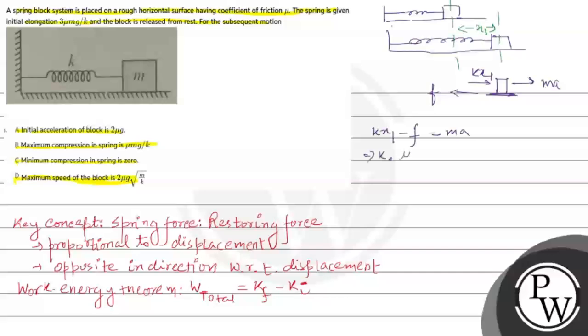x1 ka value hoga 3 mu mg by k. k gets cancelled out. And f ka value hoga mu into n. Mu is the coefficient of friction and n is the normal force, and n equals to mg, that is the gravitational force. So 3 mu mg minus mu mg equals to ma. m gets cancelled out from both sides of the equation, and we have acceleration a equals to 2 mu g.